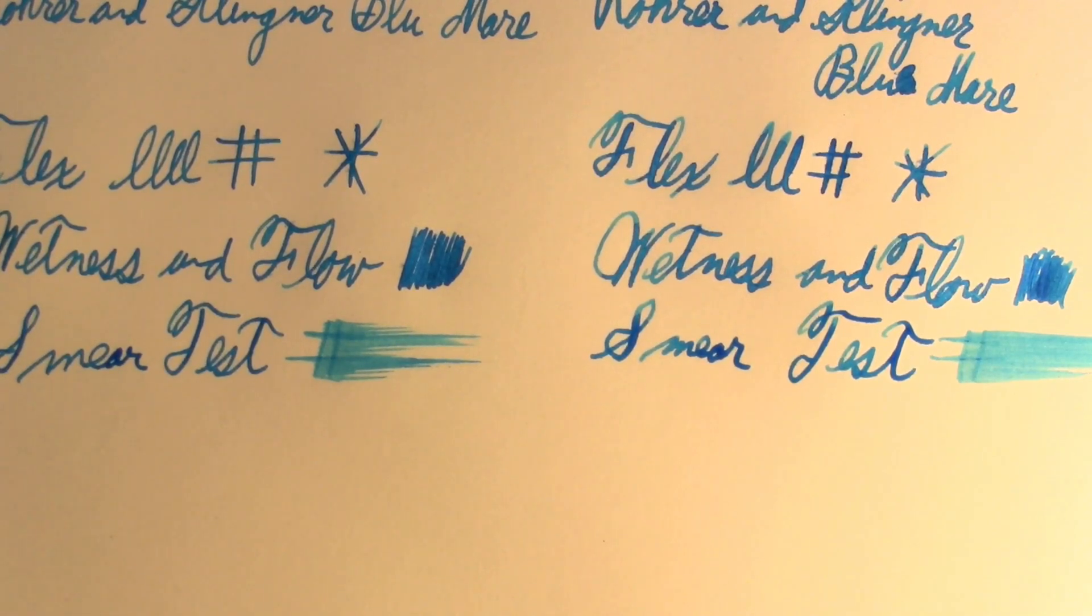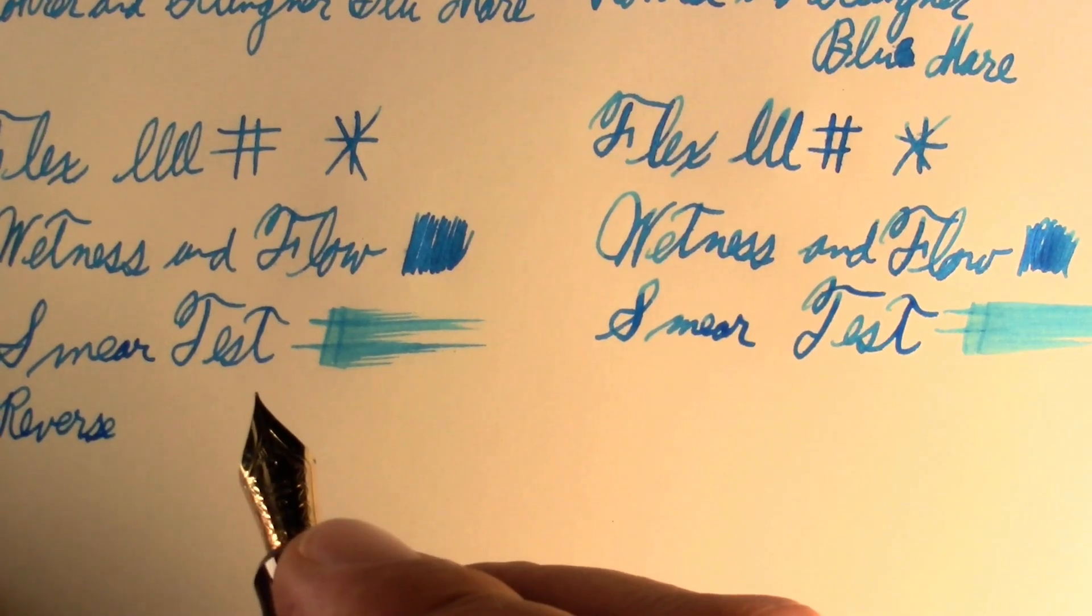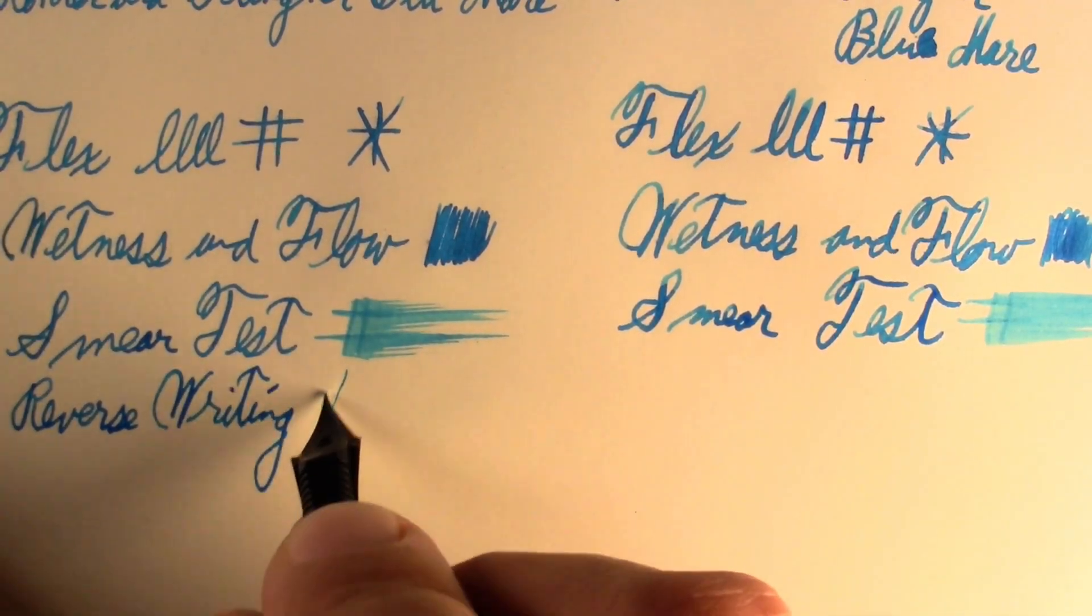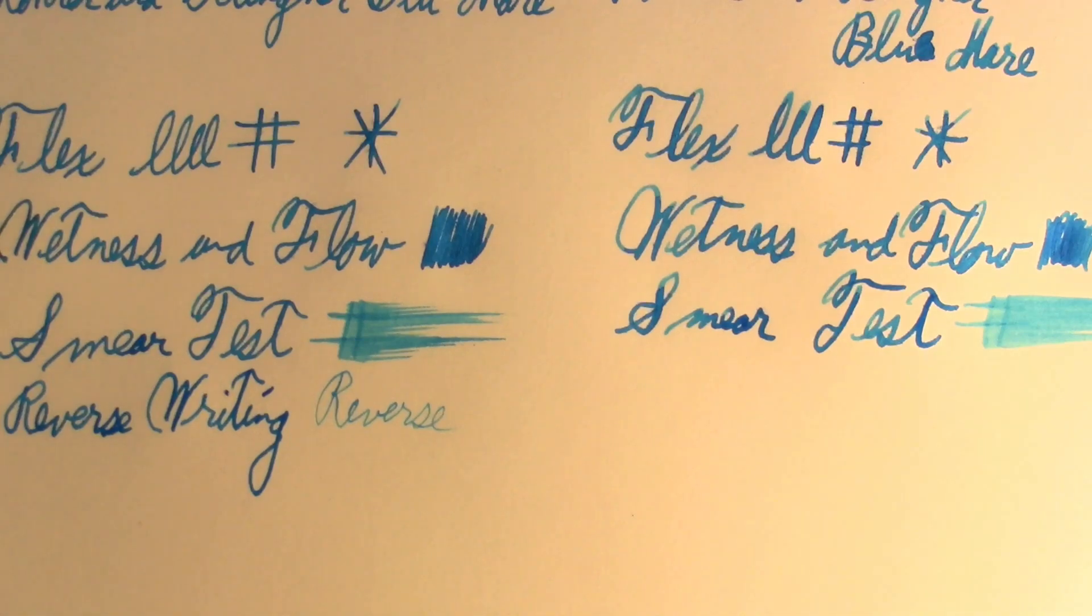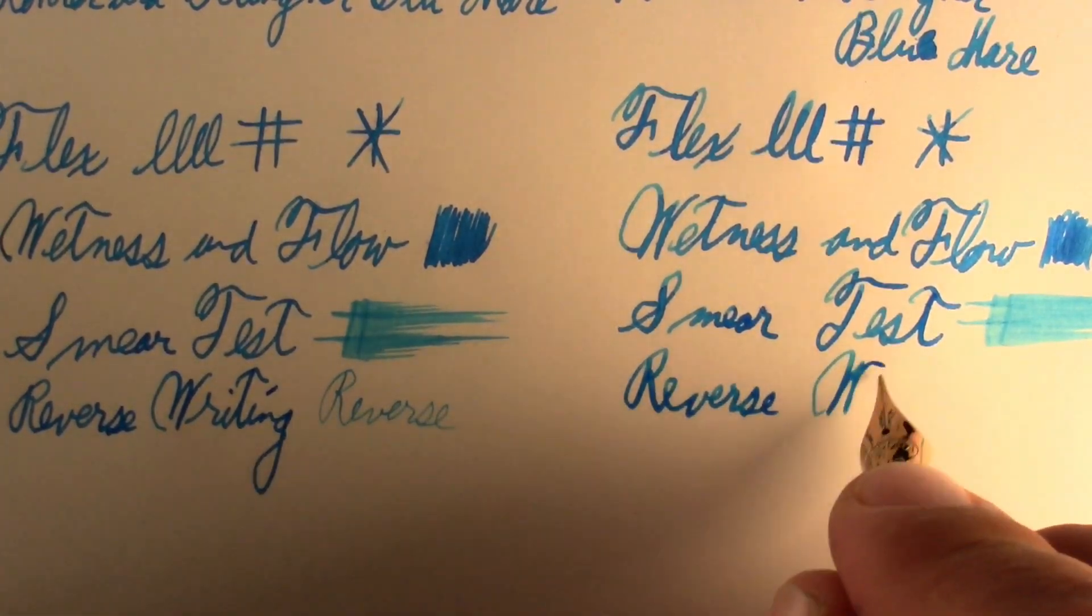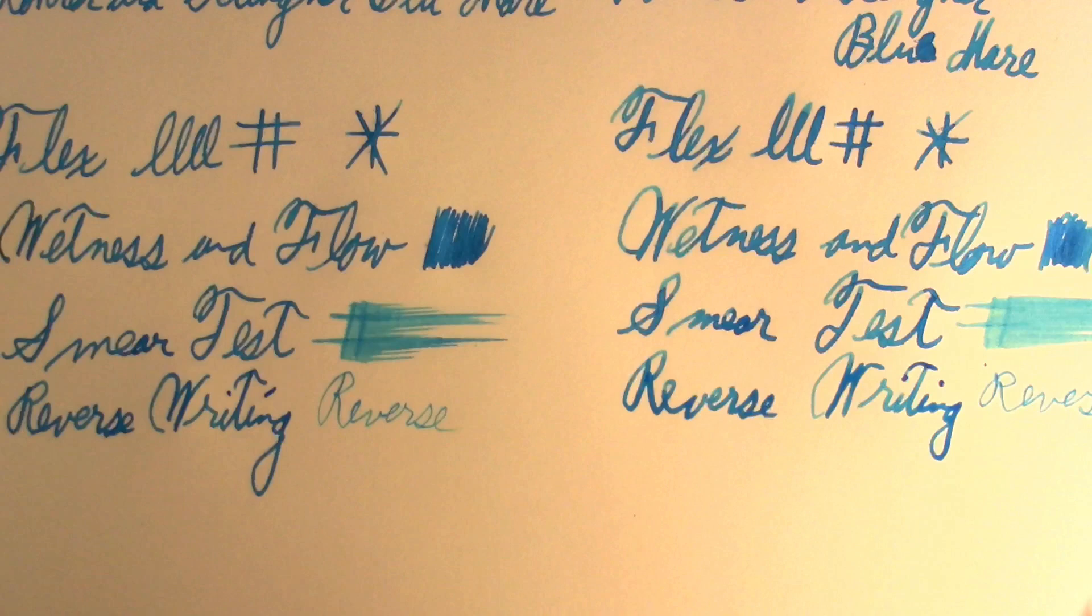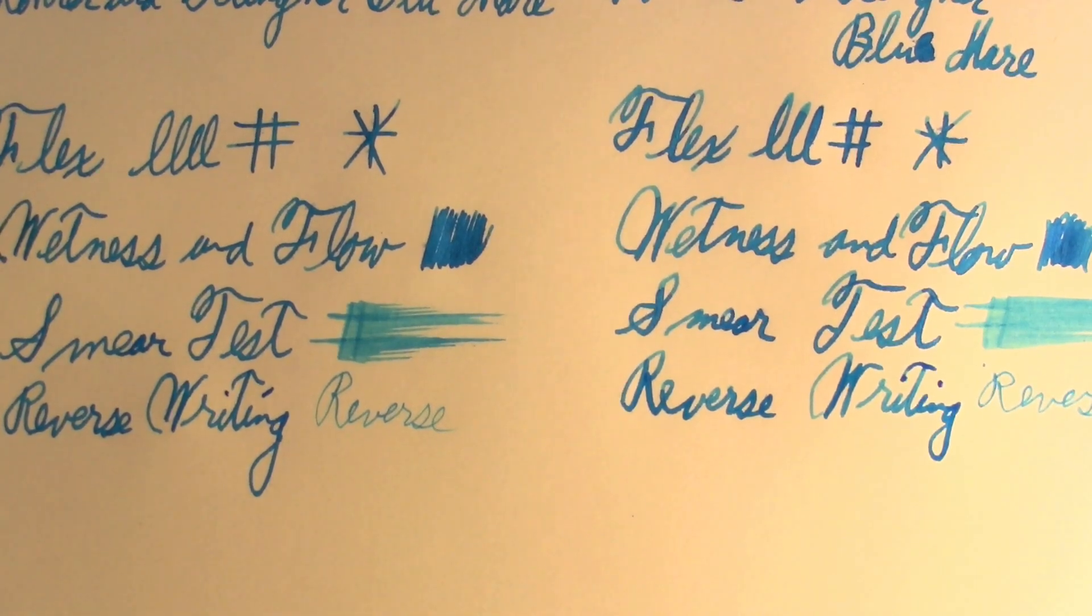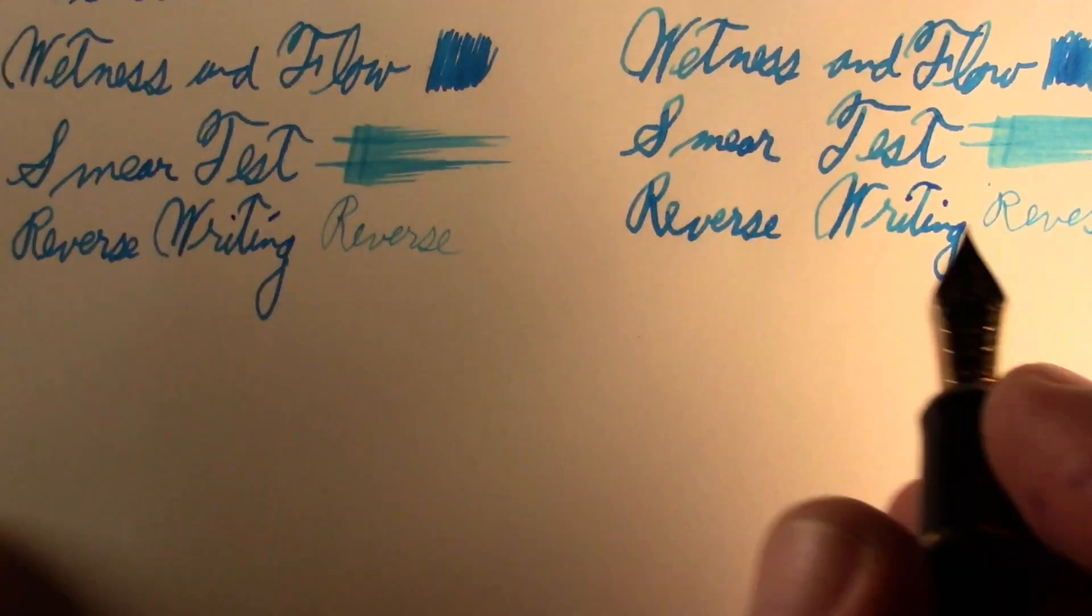And reverse writing. There we go. Kind of a scratchy ultra extra fine, that's really faded and disgusting. One thing I'm liking with these new lights is I'm not seeing... Ew, that's just freak nasty. I don't even have a good word for it. Freak nasty, that's what we're going with.